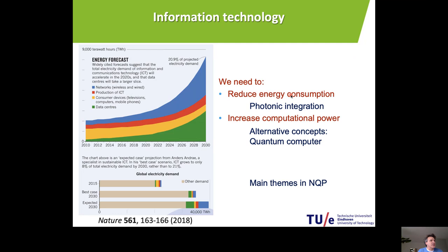It's clear that we should try to make these devices more efficient and reduce the energy consumption. One way of doing this is by photonic integration. Currently, all these chips are based on electronic signals, and the problem is that we suffer from electronic resistance. This has two consequences: we lose energy, and we cannot go to higher frequencies. If we use photons instead of electrons, we do not suffer from this resistance, and we can overcome these resistive losses. So photonic integration is one way to reduce the energy in information technology.